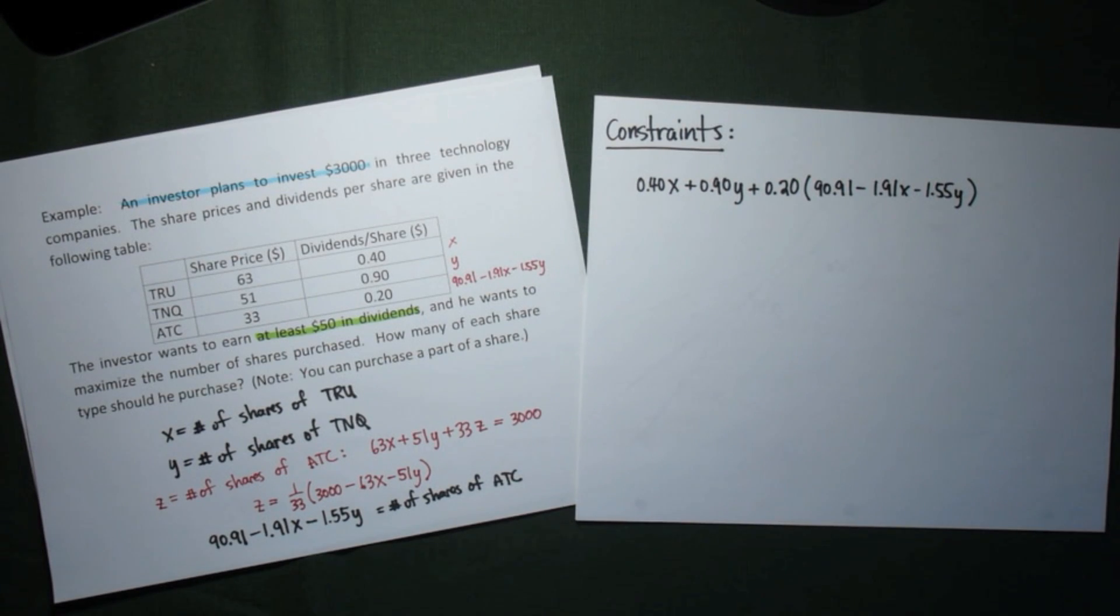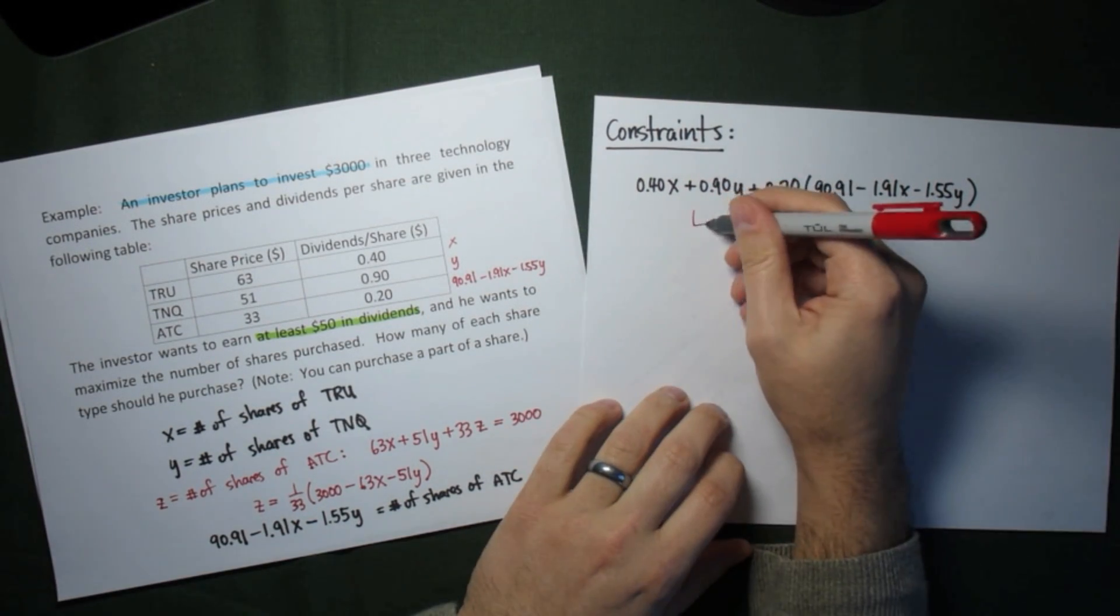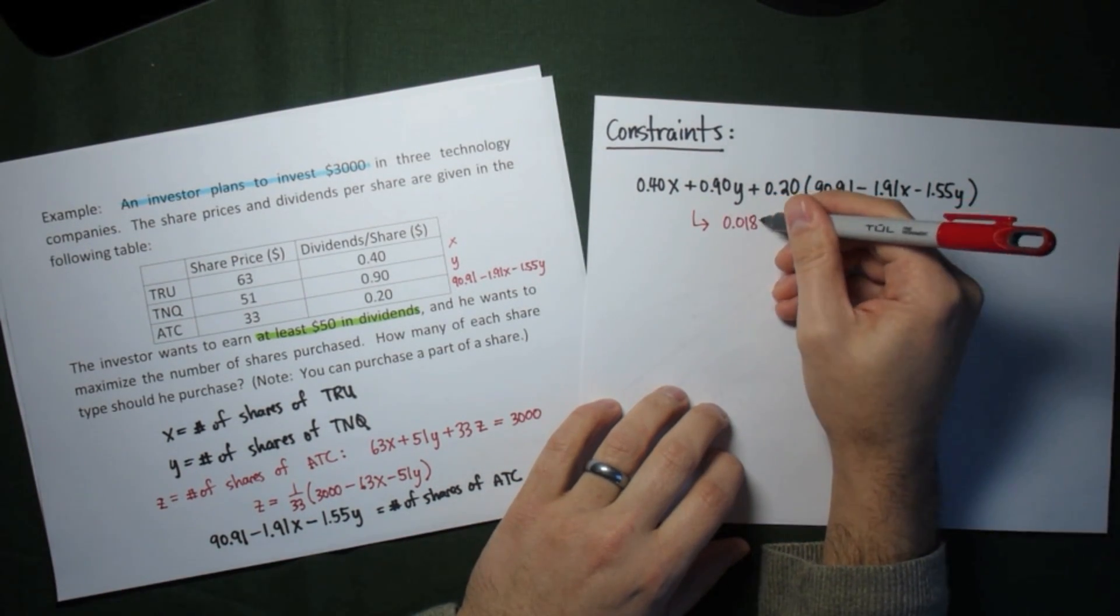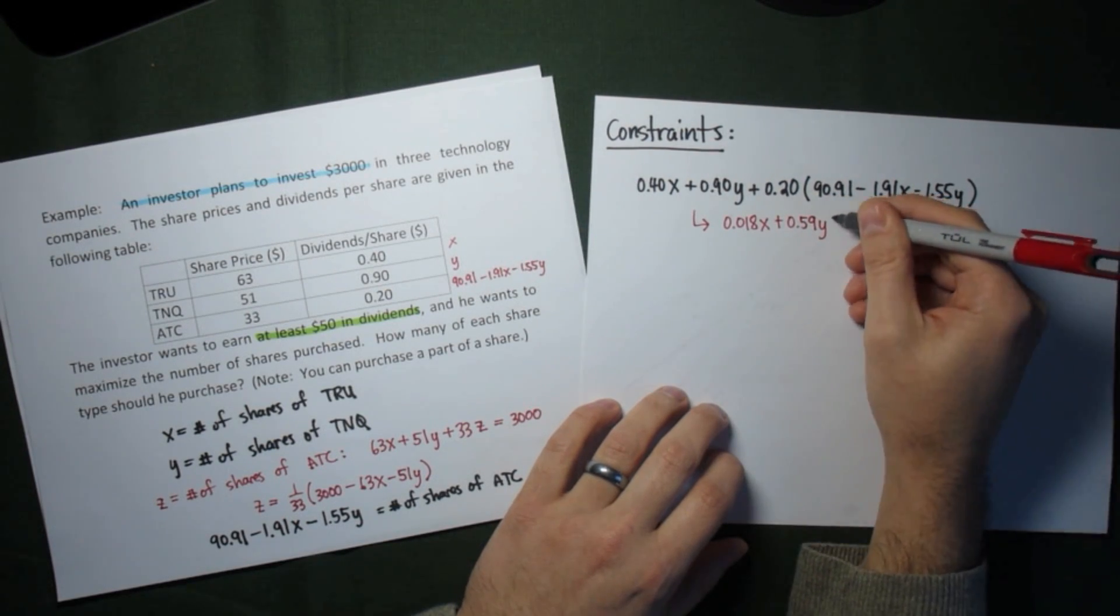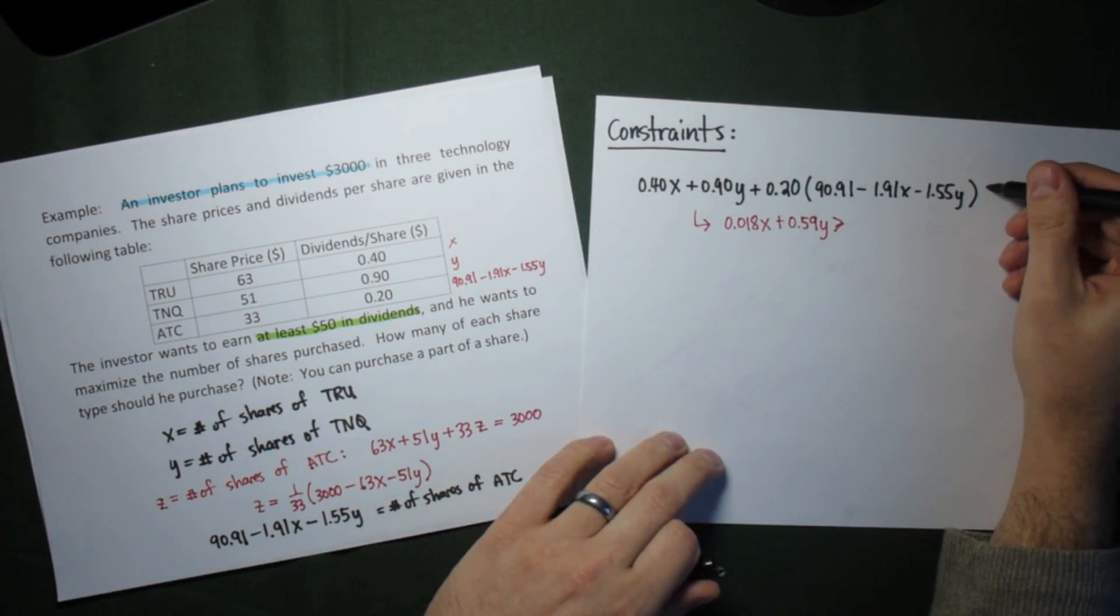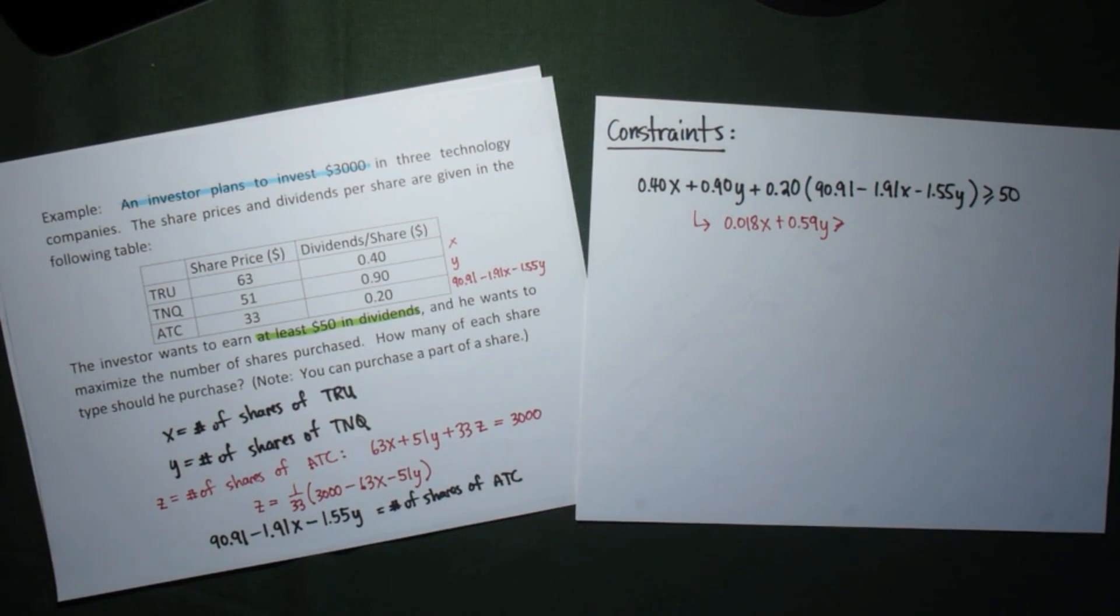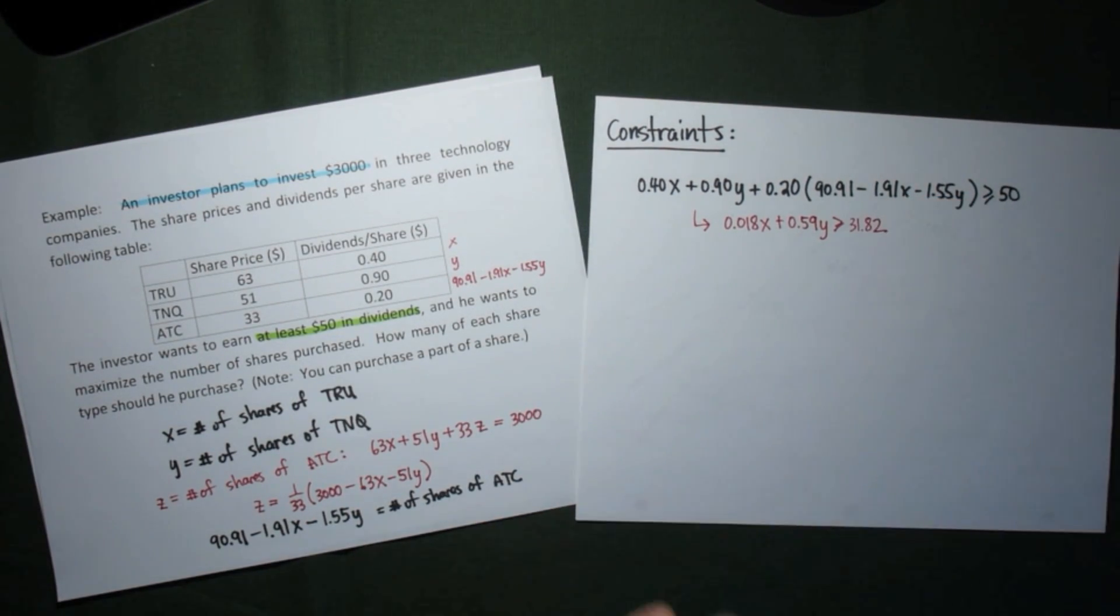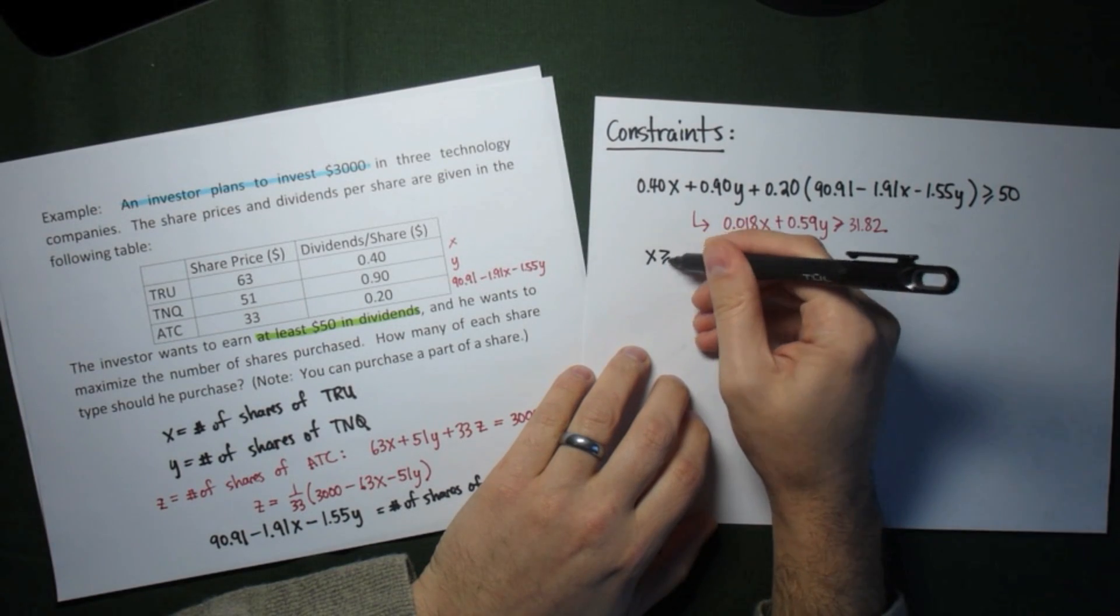Notice that we use the entire expression for z in place of z. And so, this will be the total number of dividends. If we want to simplify this a little bit, we collect all the x's and all the y's together, and we need a right-hand side. And so, looking at the dividends, this has to be greater than or equal to 50, which means, taking all our numbers to the same side, this will be greater than 31.82.